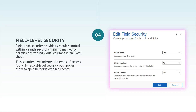Field-level security provides granular control within a single record. Similar to managing permissions for individual columns in an Excel sheet, this security level mirrors the types of access found in record-level security but applies them to specific fields within a record.